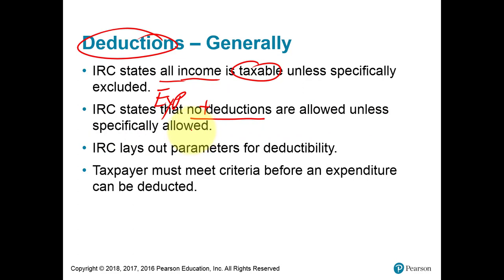So maybe it's the worst of both worlds. Everything is taxable income, and everything is not deductible unless it's specifically excluded — that's the income side — or allowed as a deduction.